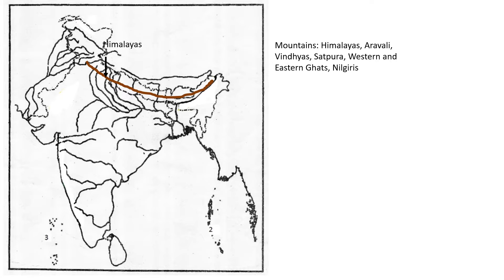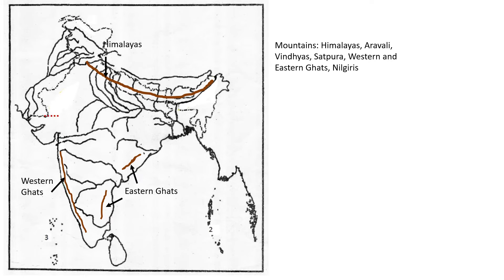Then we have Eastern Ghat. Eastern Ghat should be in two parts and they shouldn't go over the rivers, because those are dissected by the rivers — place them a little far from the eastern coast. Then the other one is Western Ghat, right from Godavari till the end — you can take it as a continuous line.